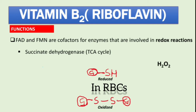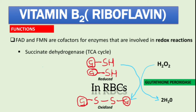In the glutathione pathway, hydrogen peroxide reacts with the reduced form of glutathione to produce the oxidized form of glutathione, in the presence of the enzyme glutathione peroxidase, releasing water as a byproduct.